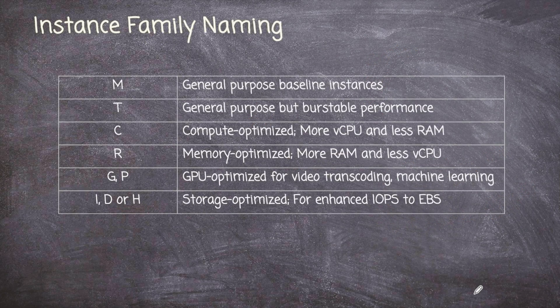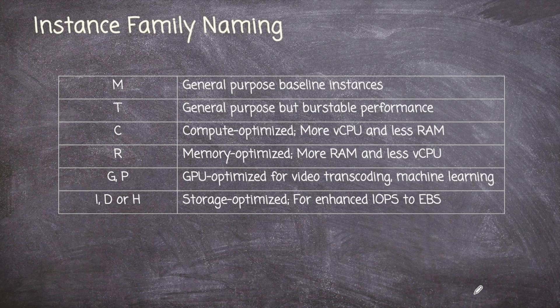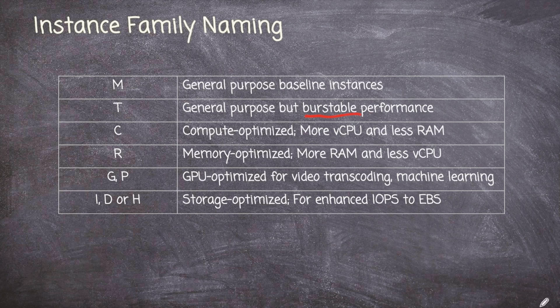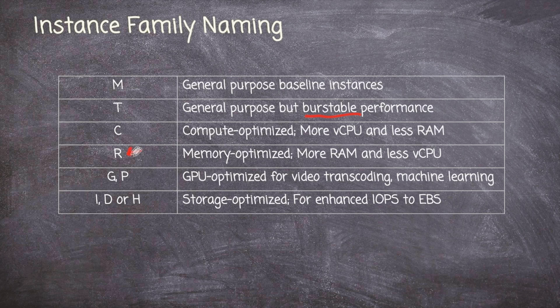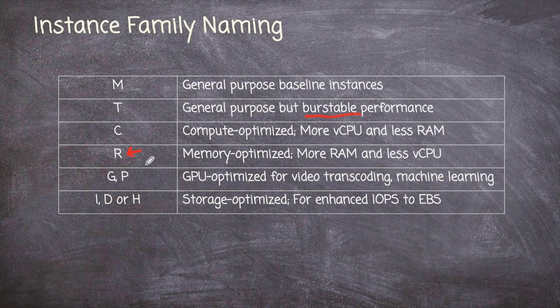So let's look at some other naming here. We have M, that's the general purpose. If something started with a T, that would tell me it is a burstable instance. And we'll talk about what burstable is in a minute. If it starts with a C, it is a compute-optimized instance. That just means it probably has more CPU and less RAM. Now, a memory-optimized instance, the one that starts with R here, is exactly the reverse. It has more RAM and less CPU.